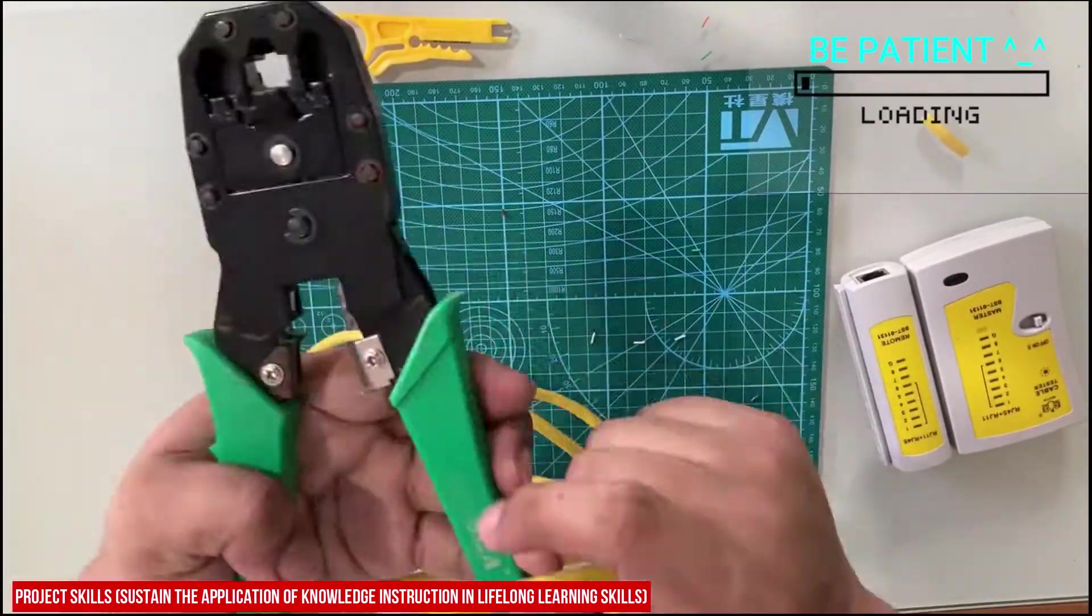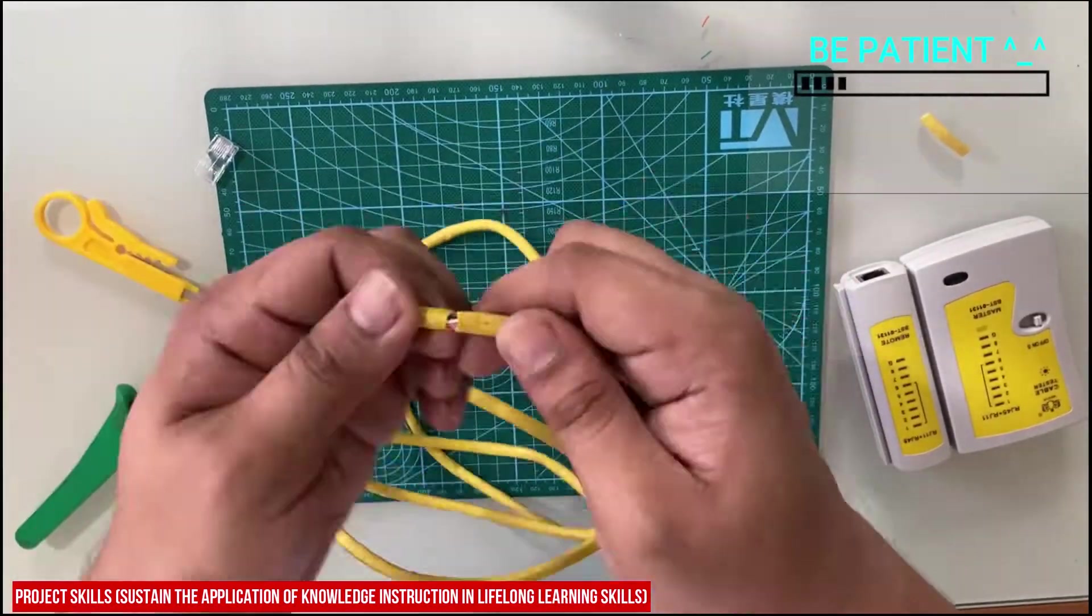By the way, you can use the portable cable or wire stripper in removing the cover of the UTP cable.